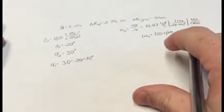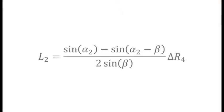Now that we have the angles, we can find the link lengths. Link 2 can be found using this formula: L2 equals sine of alpha 2 minus sine of alpha 2 minus beta over 2 sine of beta times delta R4.